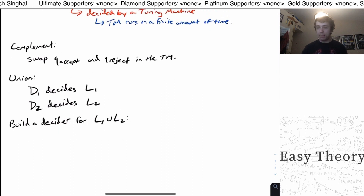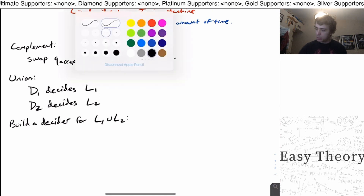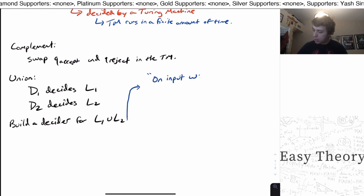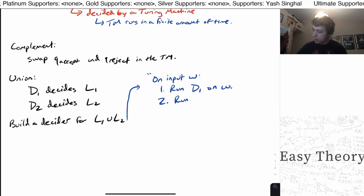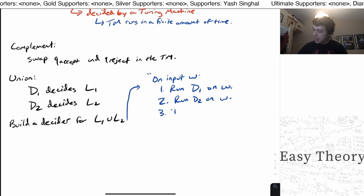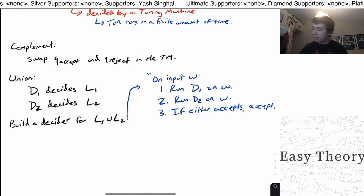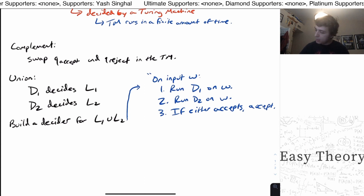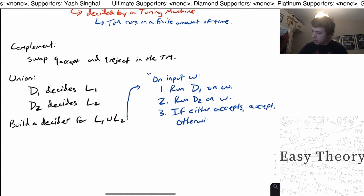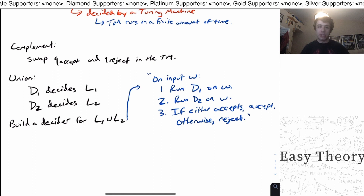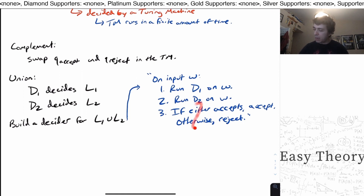So to build the decider: run D1 on W, then run D2 on W. If either accepts, then we accept. We can reach this step in a finite amount of time because the first two steps run in a finite amount of time. Otherwise we reject, because if neither one accepts then it can't possibly be in the union. We could also accomplish this with complement — run one machine on W and invert the answer. This runs in a finite amount of time, pretty clearly. What about intersection?